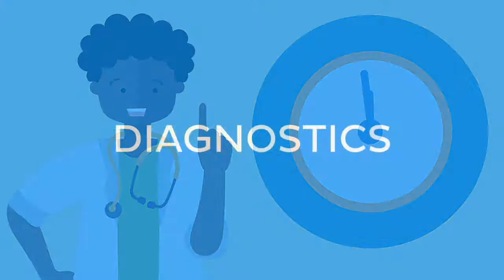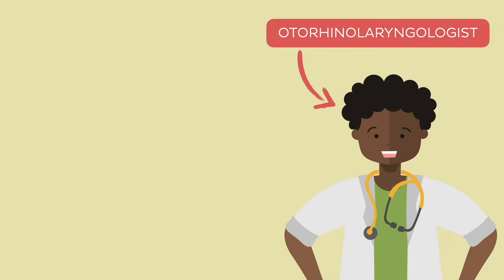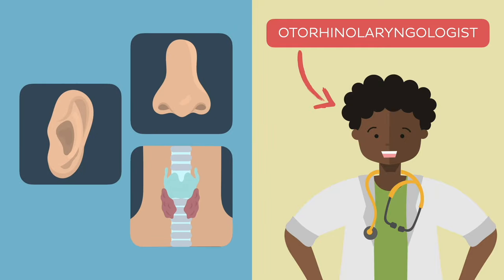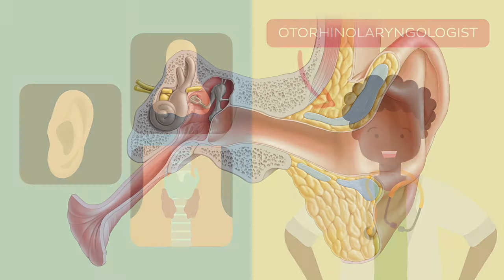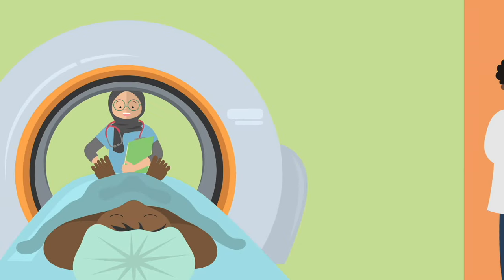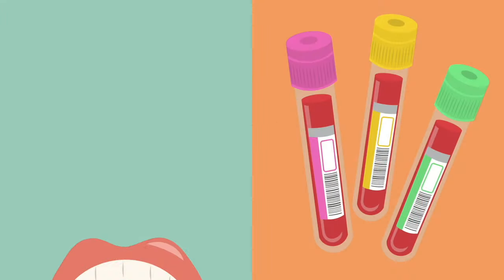Otitis media is diagnosed by an otorhinolaryngologist — a doctor specializing in diseases of the ear, nose, and throat. This disease is usually diagnosed through an examination of the ear with a device called an otoscope. In cases where there is suspicion of developing complications, imaging studies such as MRI or CT are usually performed, as well as blood and smear tests.